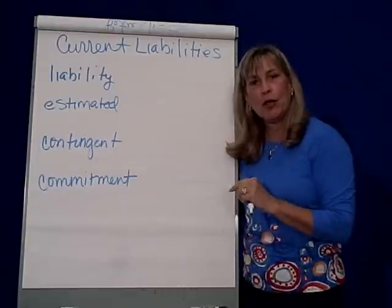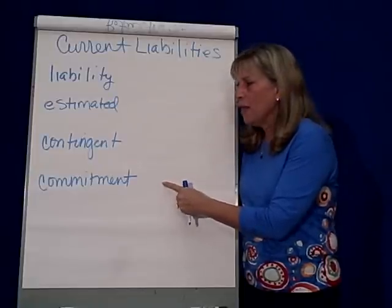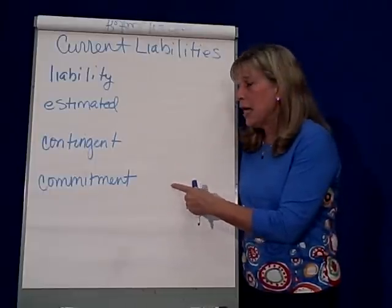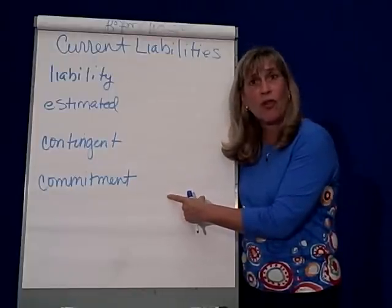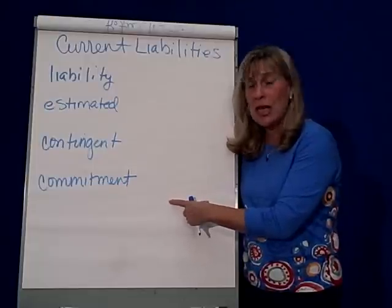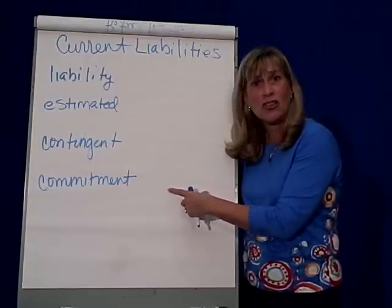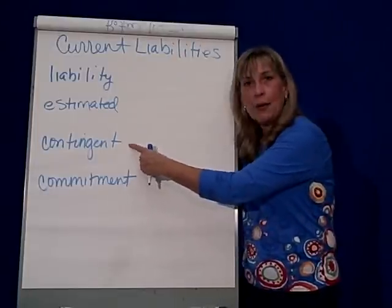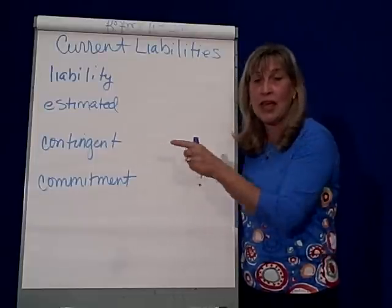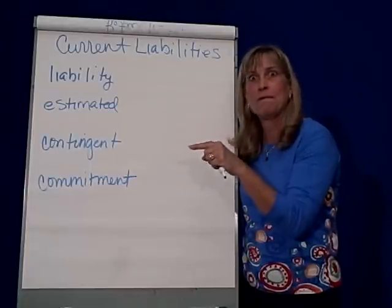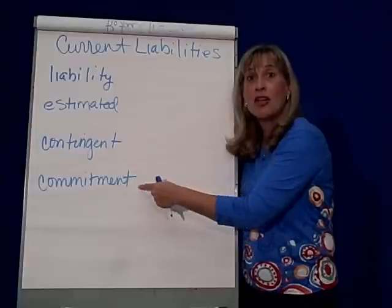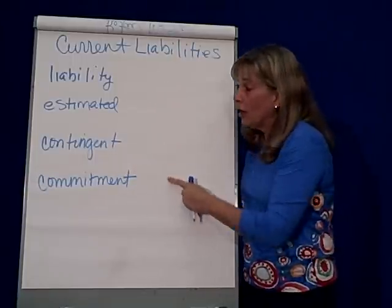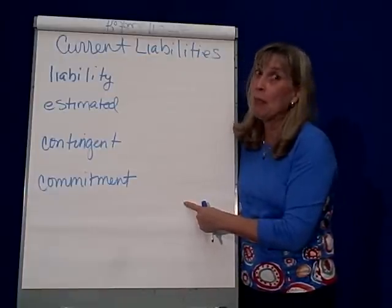The last kind of liability is a commitment, and this doesn't show up on the financial statements at all. It will be disclosed in the notes, such as signing a lease or a purchase agreement. It's a legal obligation, but it's not an accounting transaction that shows up until you actually pay your lease payments or purchase agreement. Contingent liabilities are also disclosed in the notes to the financial statements. Liabilities and estimated liabilities, however, do show up on the balance sheet. Those are the different ways you can be liable for promises made to others.